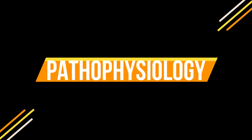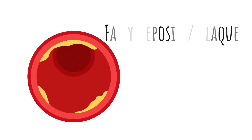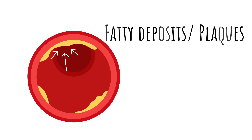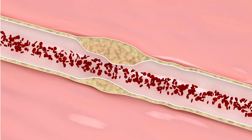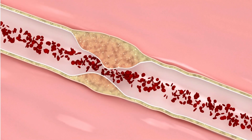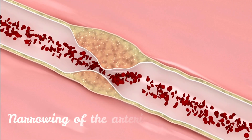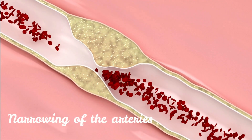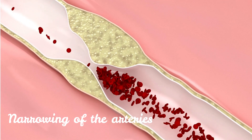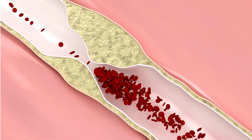Here is a step-by-step explanation of the pathophysiology of a heart attack. Number one: atherosclerosis. The underlying cause of most heart attacks is atherosclerosis, a condition where fatty deposits called plaques build up on the inner walls of the coronary arteries. These plaques narrow down the arteries, reducing blood flow and making them more susceptible to rupture.